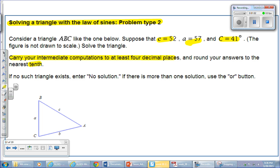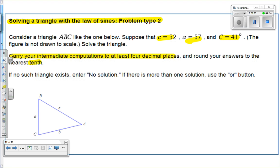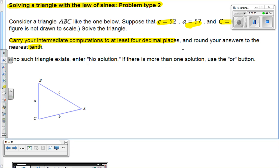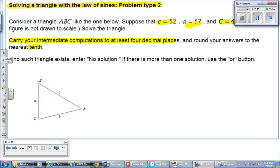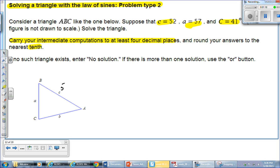So let's fill in what we know. Let's start off that way. Let's just fill in what we know. We'll kind of go through it little by little. We'll figure it out. So it says c is 52. So this value is 52. A is 57, so this value is 57. The value for C right here is going to be 41 degrees.